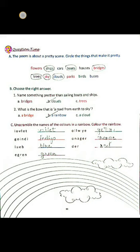Next, exercise C: unscramble the names of the colors in a rainbow and colour the rainbow. Children, here we can see the words are given but they are incorrect — they are in jumble form. We have to correct them. So let us see the first word.